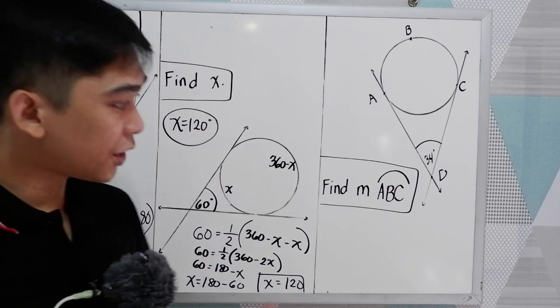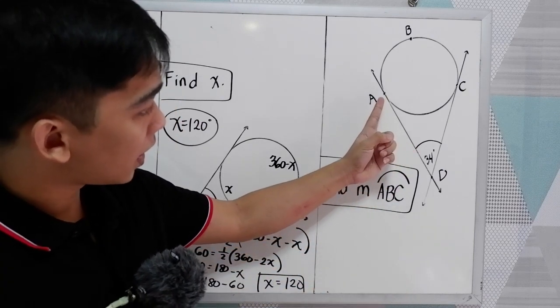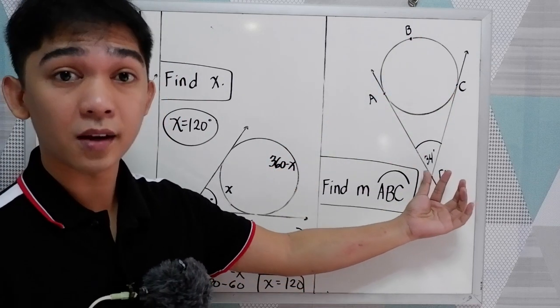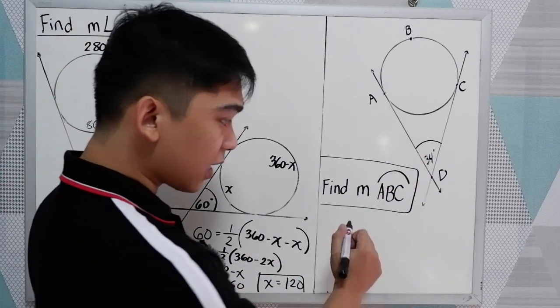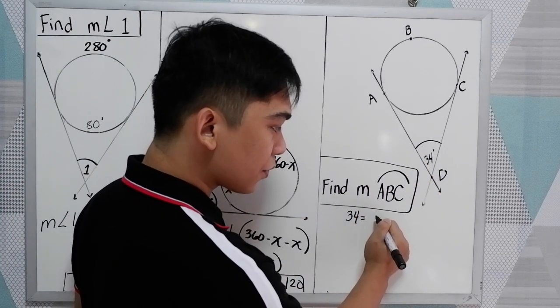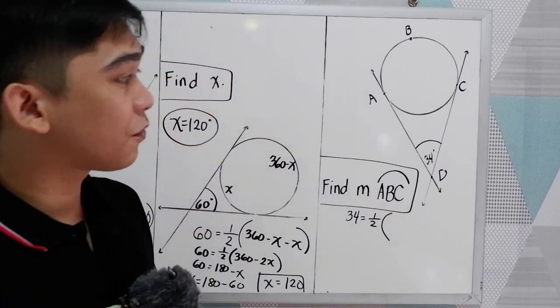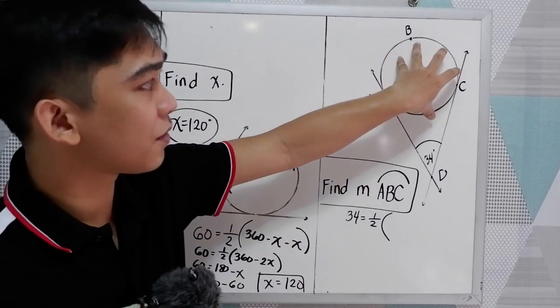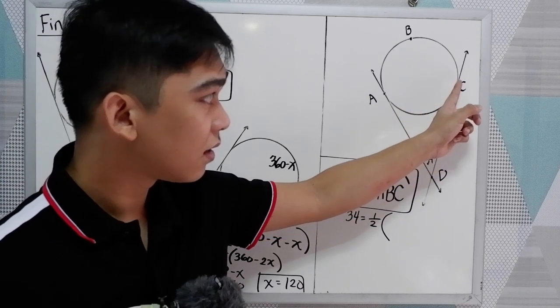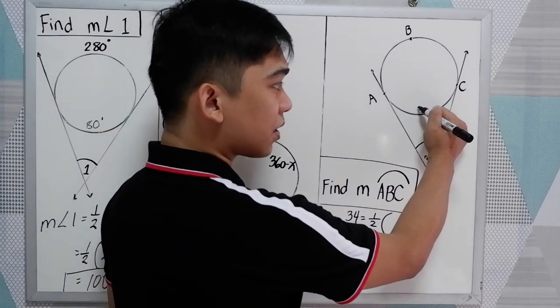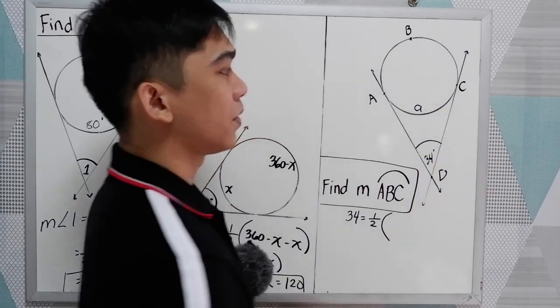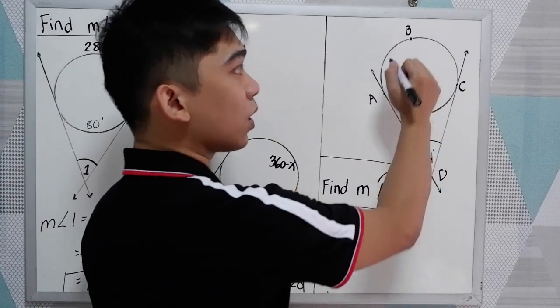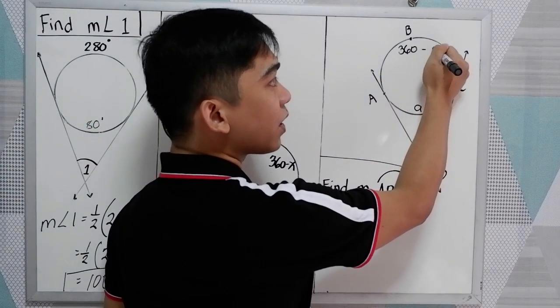And for our third problem, we need to find the measure of arc ABC, given the exterior angle, which is 34. So the exterior angle 34 is equal to one-half of the difference of the intercepted arcs. So in this case, we don't have a measurement for this, so we're going to assign AC as our variable A. So AC will be our A, therefore, the bigger arc is equal to 360 minus A.